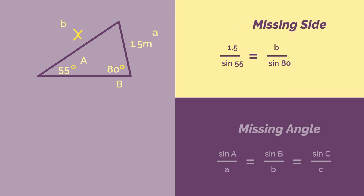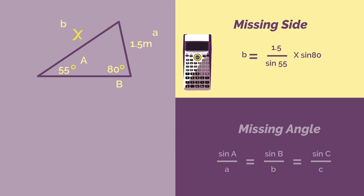To get b on its own, we do some simple rearranging by multiplying both sides by sine 80, and then these ones cancel each other out. We're left with b equals 1.5 divided by sine 55 multiplied by sine 80, which we can enter into our calculator. This gives us 1.8 meters.